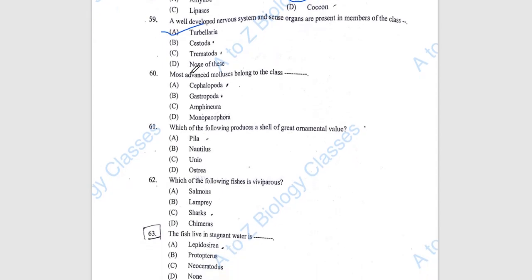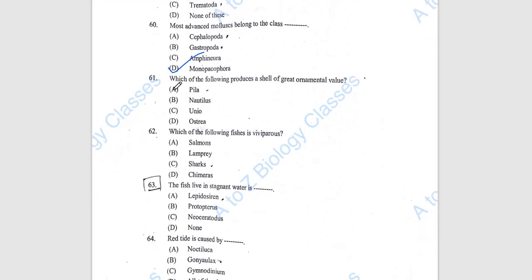Question 60: The most advanced mollusk belongs to class Monoplacophora, option D. Question 61: Which of the following produces a shell of great ornamental value? Option B, Nautilus.